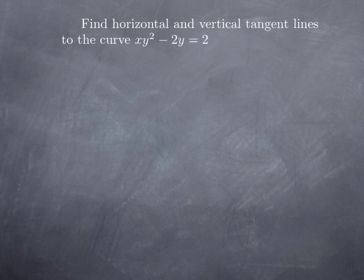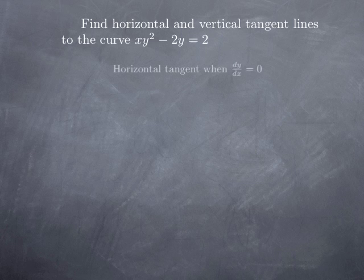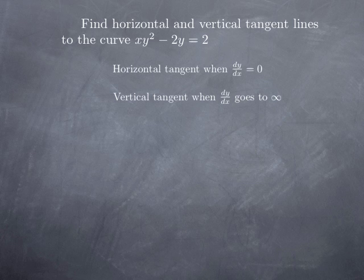Finally, consider the curve xy squared minus 2y equals 2. We want to know if this curve admits horizontal or vertical tangents, and if so, at what points. A horizontal tangent occurs when dy over dx equals 0 at a point on the curve, while a vertical tangent occurs when dy over dx goes to infinity. So we need to find dy over dx by differentiating both sides with respect to x, treating y as a function of x.